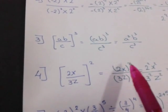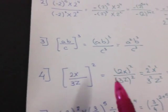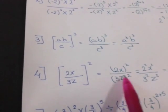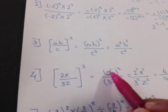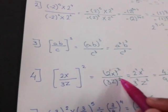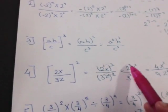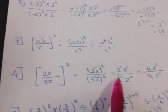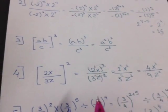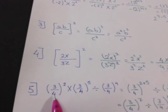Number four: two x over three z, all to the power two. I distribute the power two to the numerator and denominator. Two to the power two equals four, and x to the power two. Three to the power two equals nine, and z to the power two. So the result is four x squared over nine z squared.